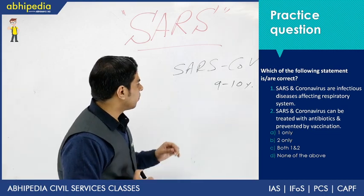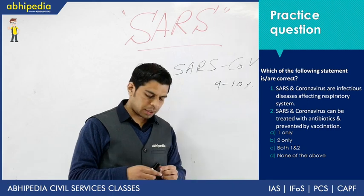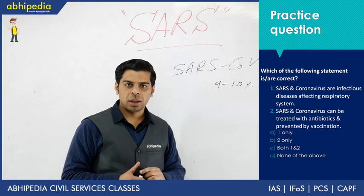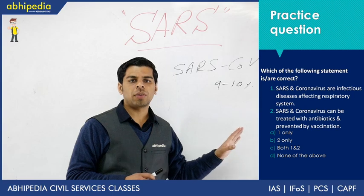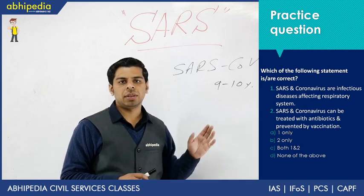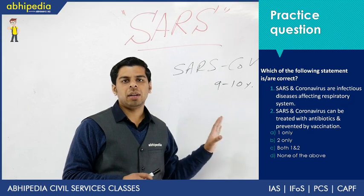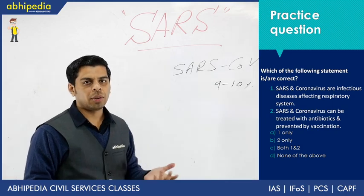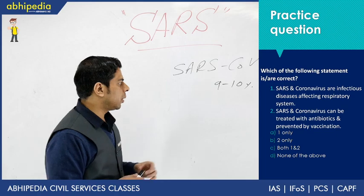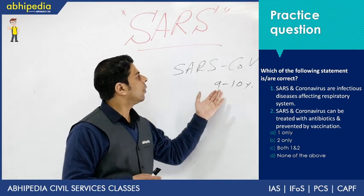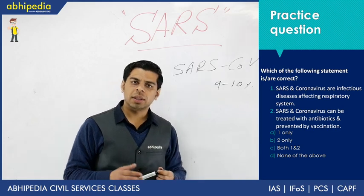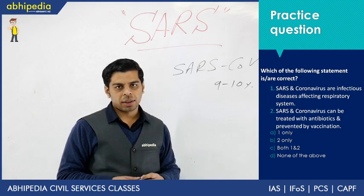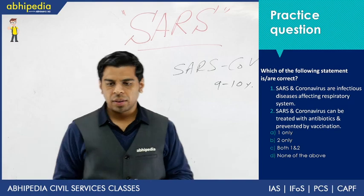Statement two states that both can be prevented through vaccination and treated with antibiotics — this is factually incorrect. Antibiotics are used specifically for bacterial infections, not viral ones. The correct term would be antivirals. Additionally, there is currently no vaccine available for either SARS or the novel coronavirus. Therefore, only statement one is correct, making option A the answer.